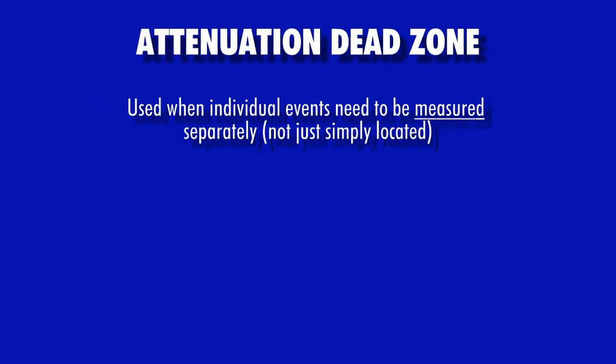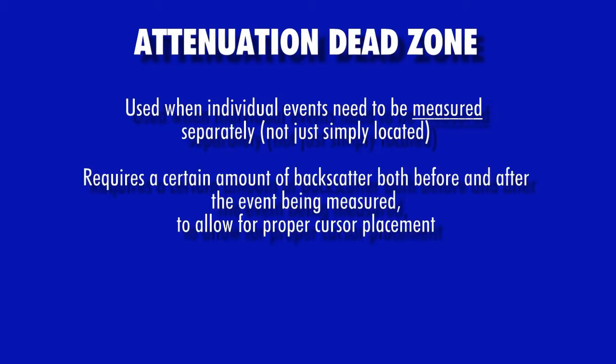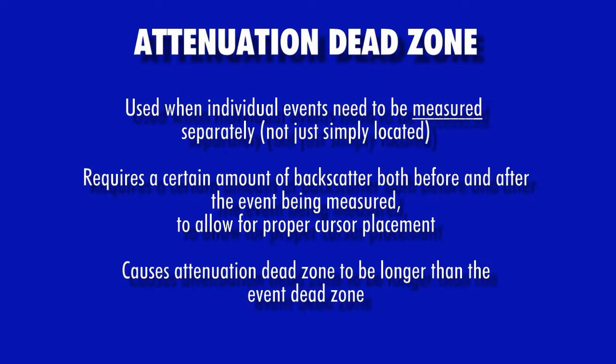Attenuation dead zone, on the other hand, is used when trying to individually measure closely spaced events. To do so, there must be sufficient backscatter between the events to allow the cursors to be placed on backscatter both before and after the event being measured. Because of this, attenuation dead zone will always be longer than the event dead zone.